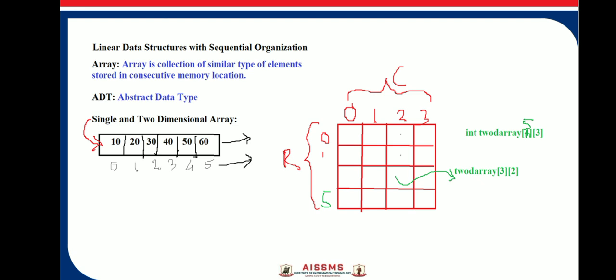The disadvantages of sequential organization are that insertion and deletion of elements become complicated due to the sequential nature. For storing data, large continuous free blocks of memory are required, and memory fragmentation occurs if elements are removed randomly.